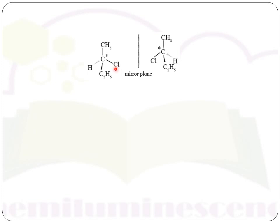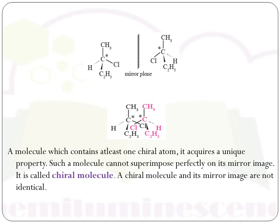If you observe the mirror image, the structure looks the same but is not identical. Here, chlorine is on the right-hand side; in the mirror image it is on the left-hand side. Hydrogen is on the left-hand side; in the mirror image it is on the right-hand side. If we put one mirror image over the other, they cannot be superimposed — they cannot cover each other perfectly. Such a molecule is called a chiral molecule. A chiral molecule is one which contains at least one chiral or asymmetric carbon and whose mirror image cannot be superimposed on it. A chiral molecule and its mirror image are not identical.